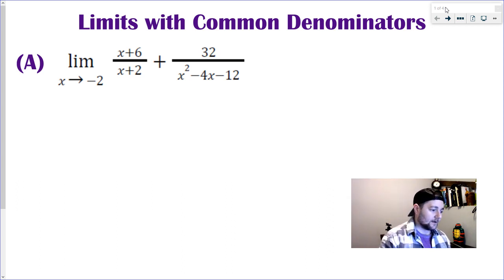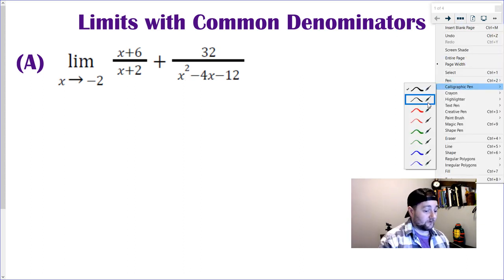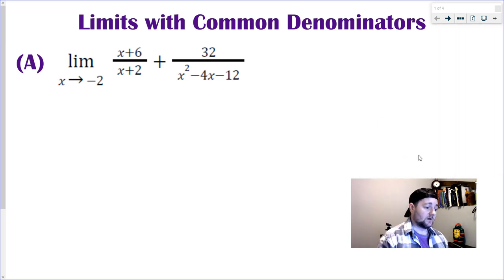So I've got one here, and the biggest thing to look for when you have limits with common denominators is you have two fractions. Often they're rational expressions added together. Rational just means algebraic fractions. Most often they're going to involve some level of factoring.